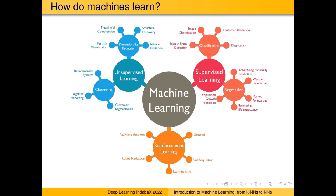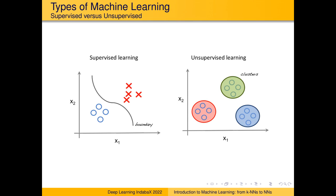What does supervised mean? It essentially means we have a human in the process. We have raw data, but we also have useful information alongside it. For example, if we show images containing cats and dogs to a computer, rather than asking it to magically figure out the two types of animals, we as humans label every single image as either a cat or a dog. Using these labels, the machine learning algorithm looks at the raw data and uses the targets to figure out the boundary between the two classes.